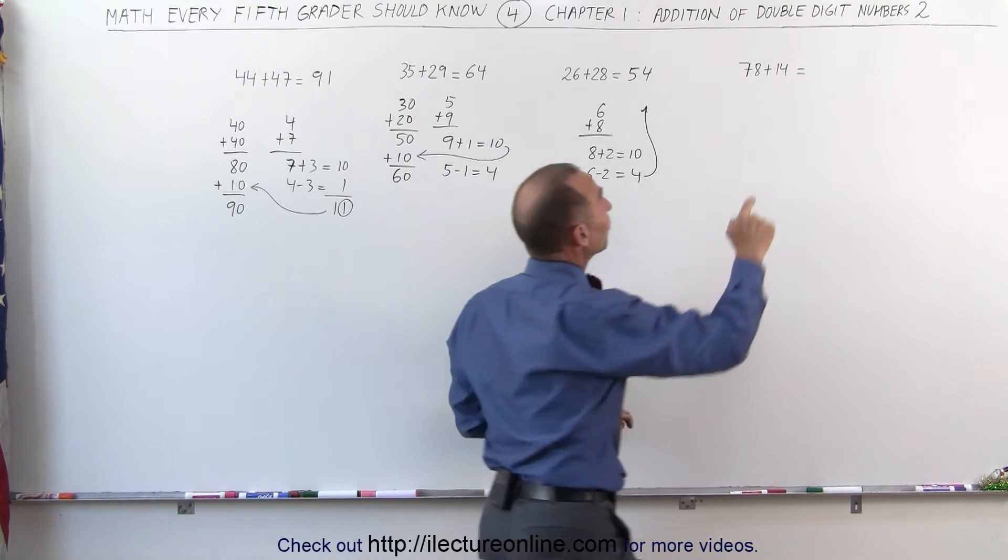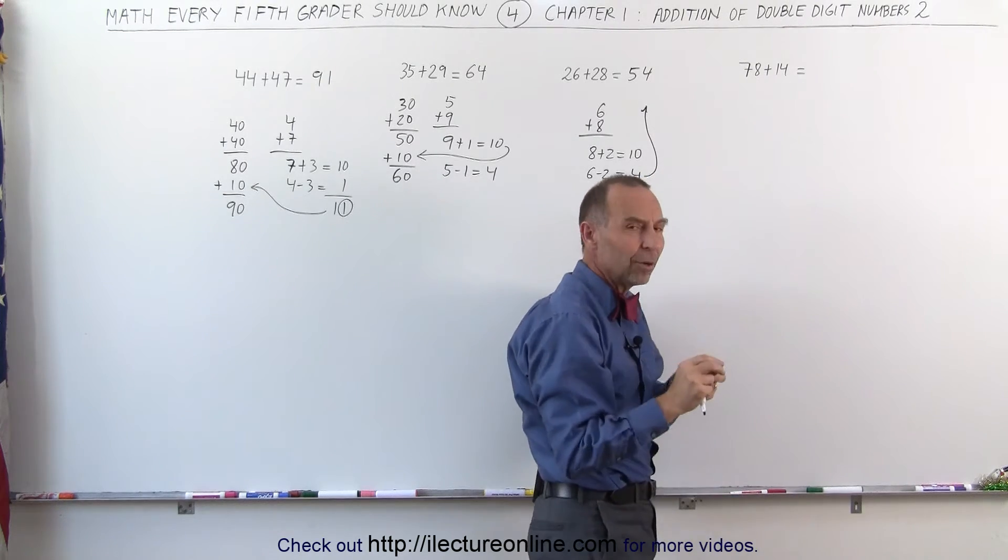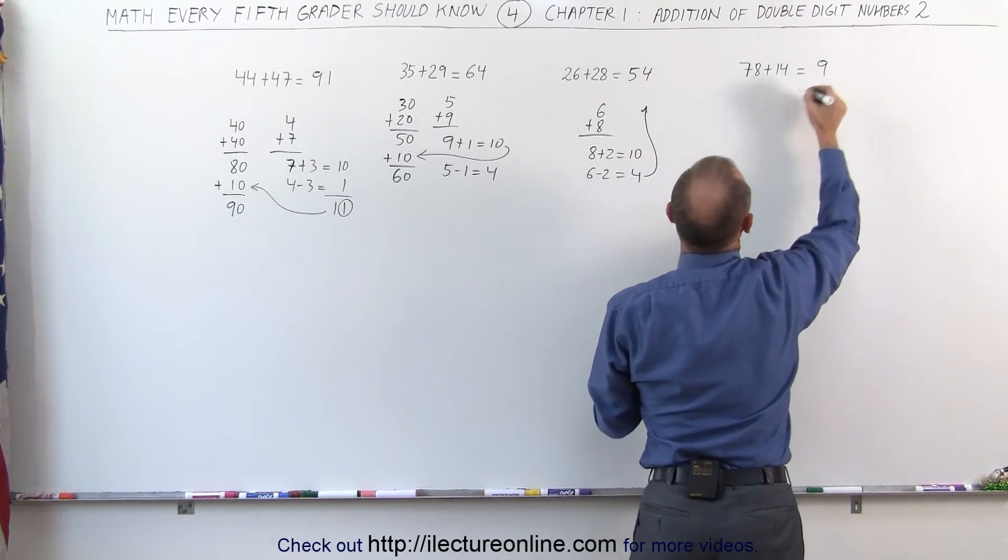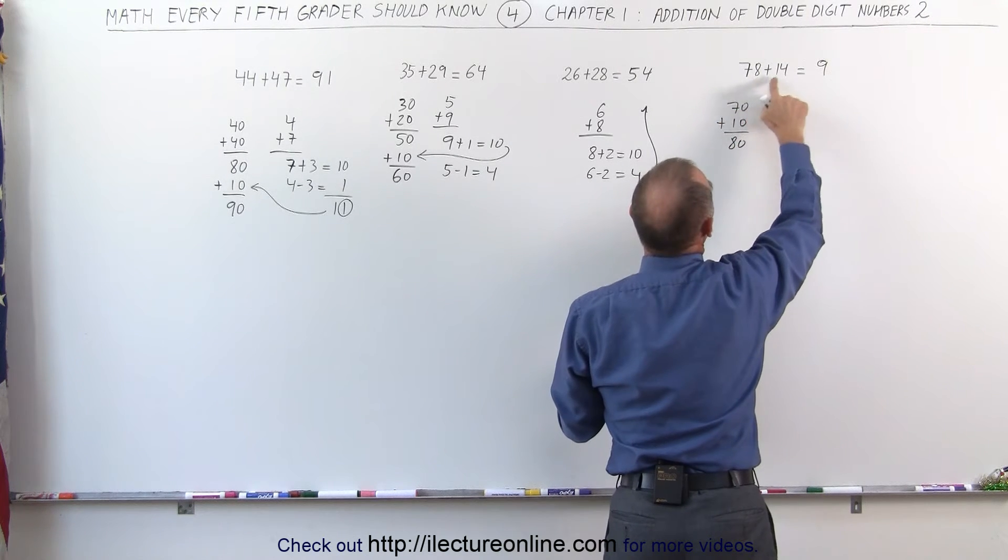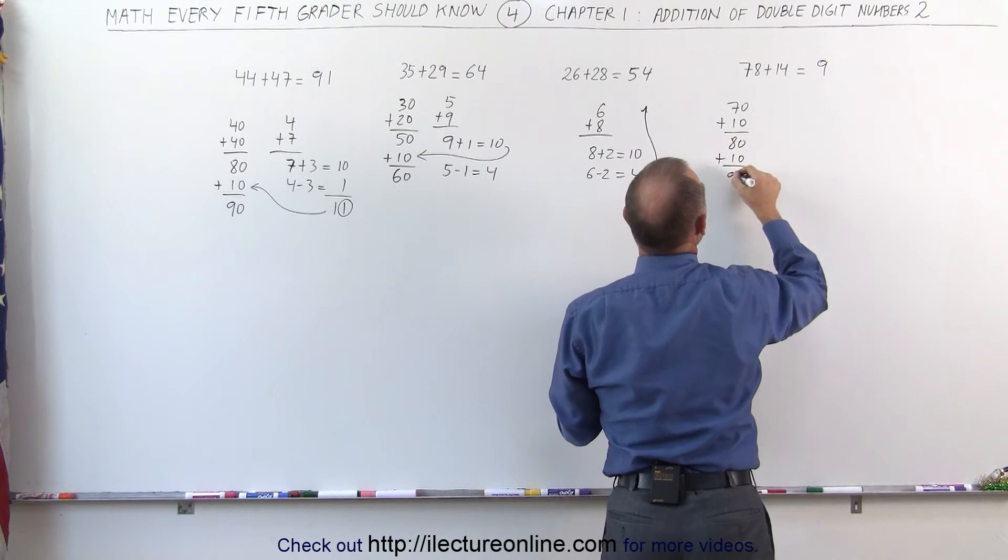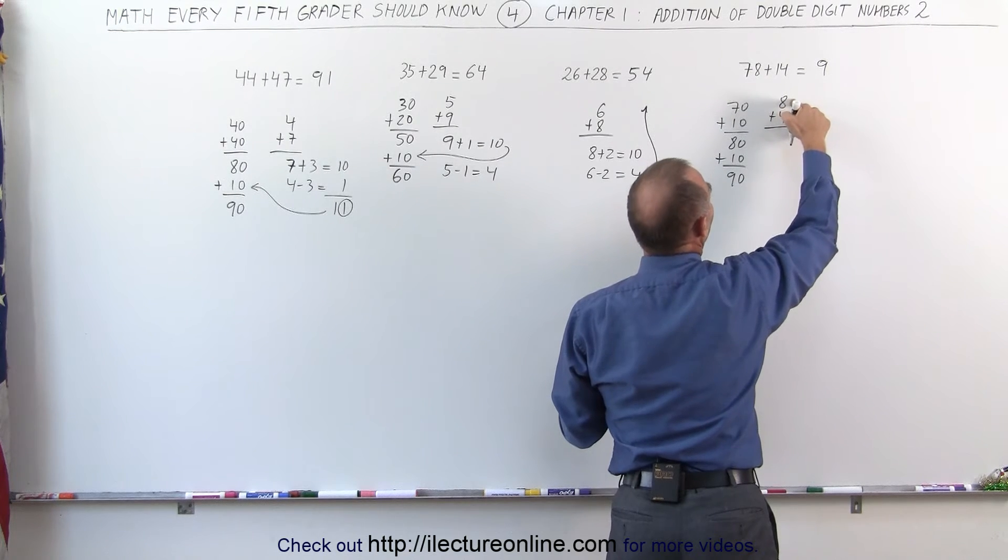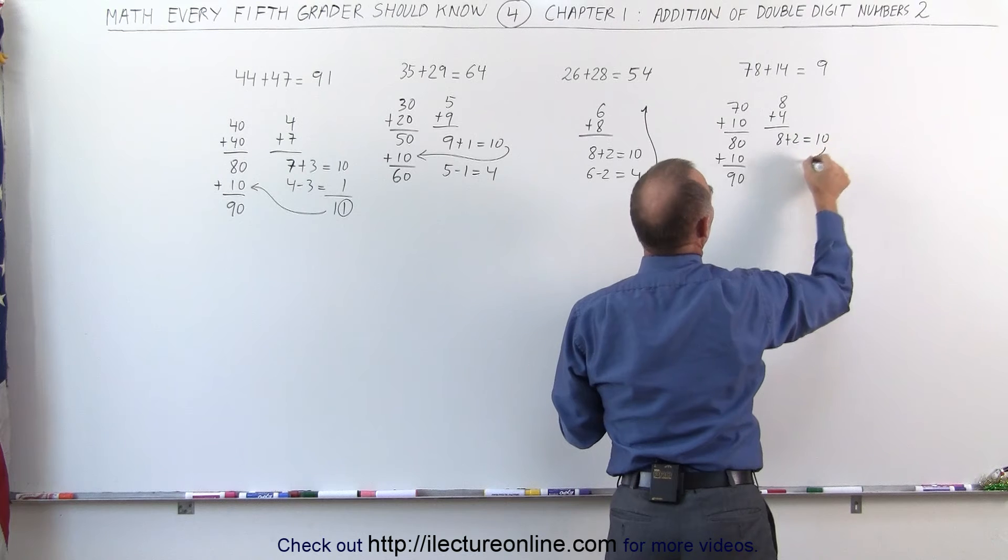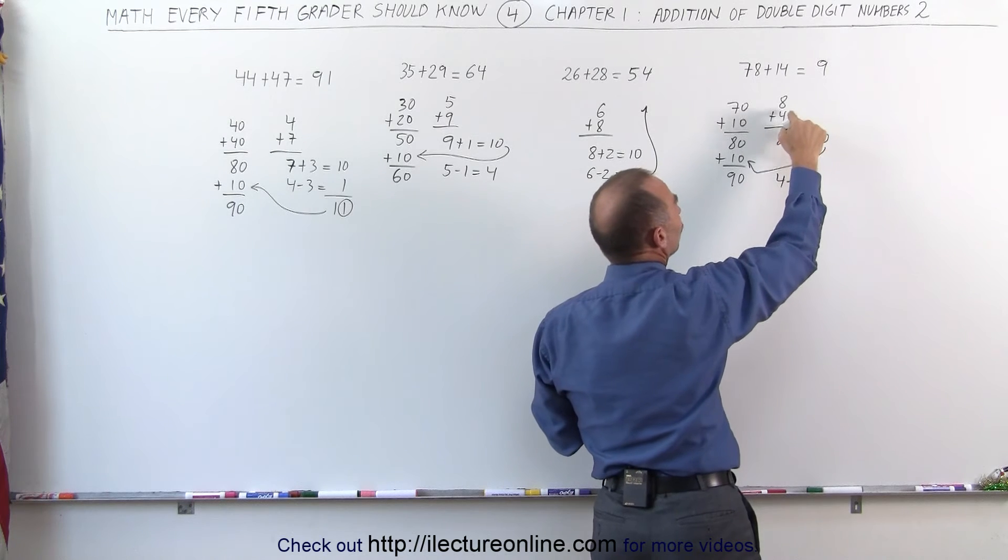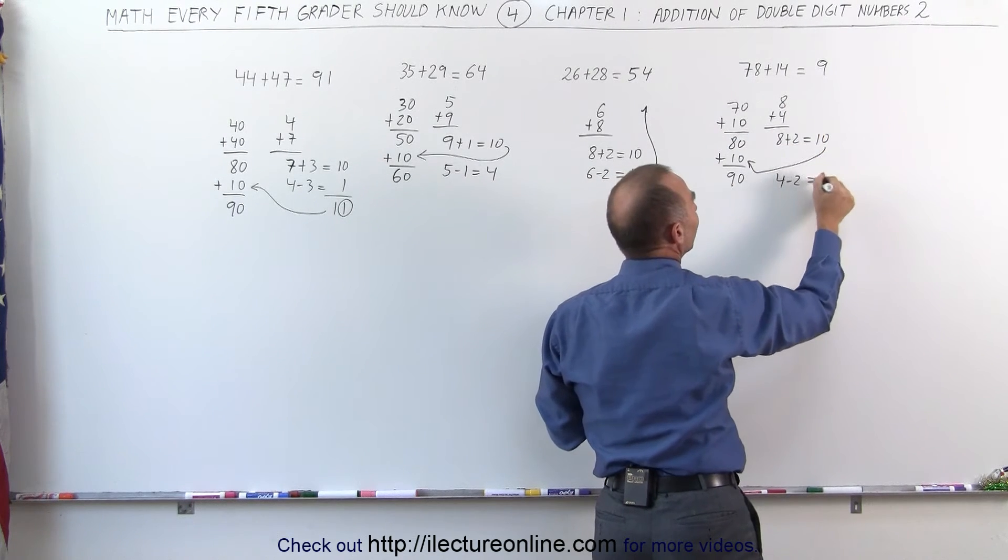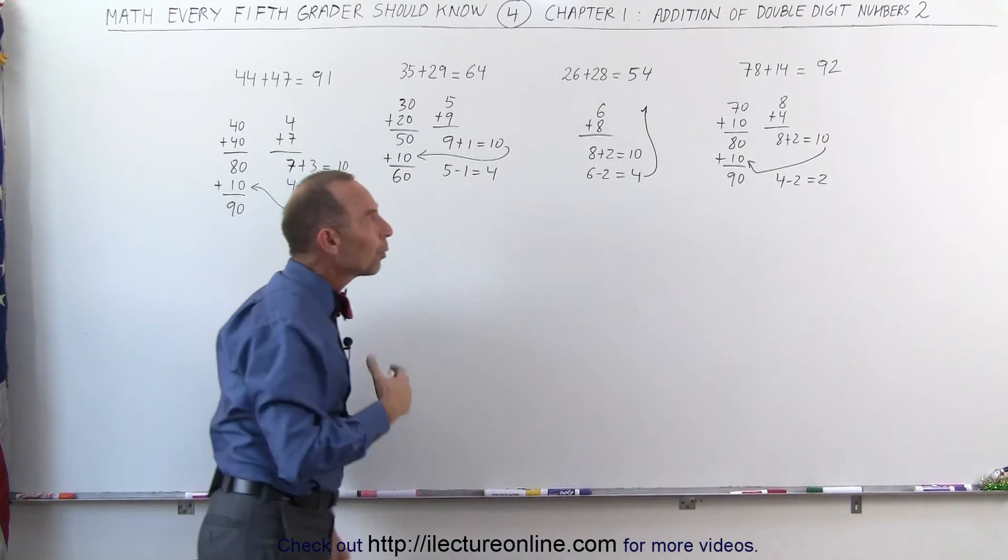Finally, in our last attempt here, we have 78 plus 14. 7 plus 1 gives me 8. However, 8 plus 4 is more than 10, so instead of writing 8, I write a 9. What I just did was I had 70 plus 10 gives me 80. But since 8 plus 4 is more than 10, I have to add another 10 to that to give me 90. Now I take 8 plus 4. Add 2 more to 8, I get 10. That's where this came from, the 10 over here. And that means that 4 minus 2, because I took 2 from the 4 to make this into 10, I have 2 left now, and that goes over here. The number is 92. So that's how you work through these types of problems.